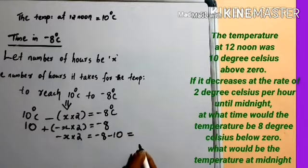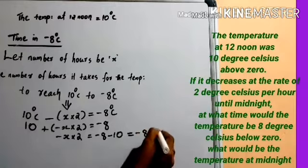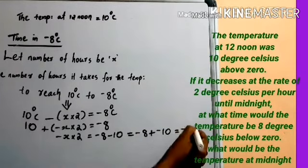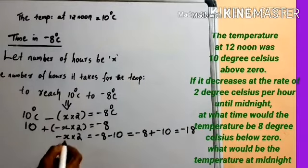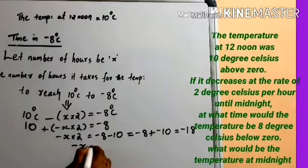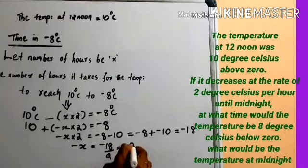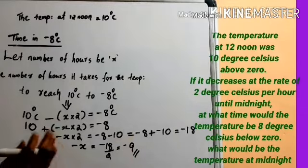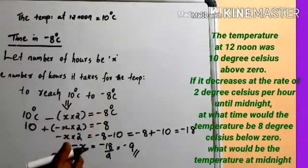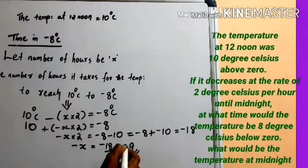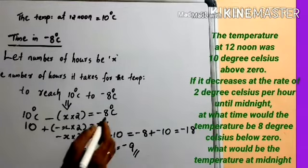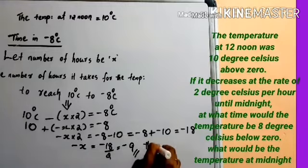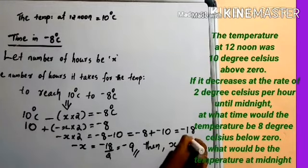This is also equals to negative 8 plus negative 10, which equals negative 18. So negative x times 2 equals negative 18, giving negative x equals negative 9. Since negative x equals negative 9, the value of positive x becomes x equals positive 9.